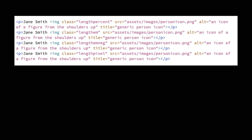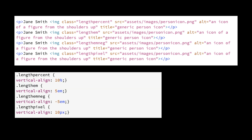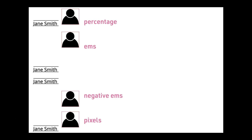This is the HTML for an example with various lengths for the vertical-align property. Here is the CSS. This is how it would display. The top item is using percentage. The second item is using ems. The third item is using negative ems. And the last item is using pixels.